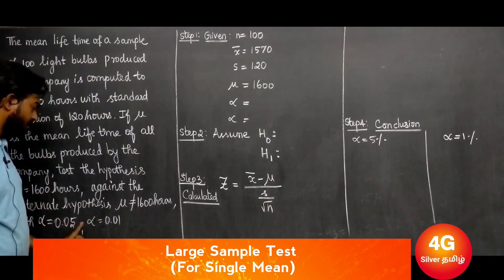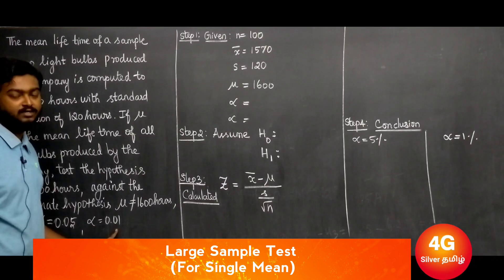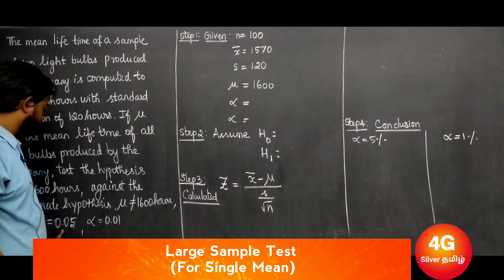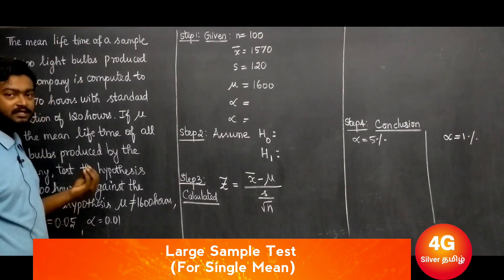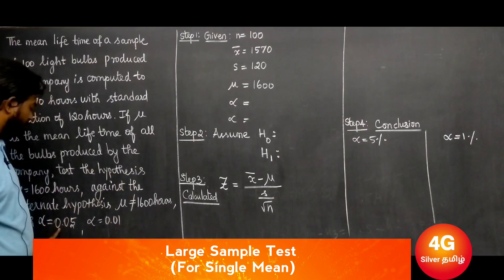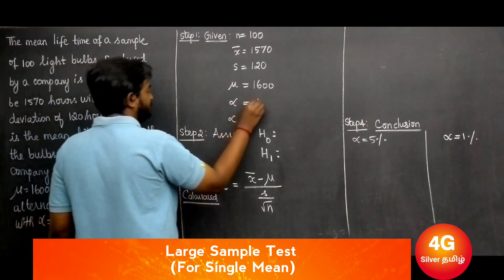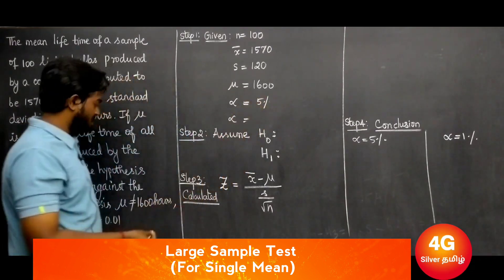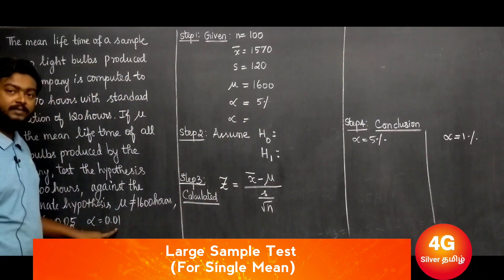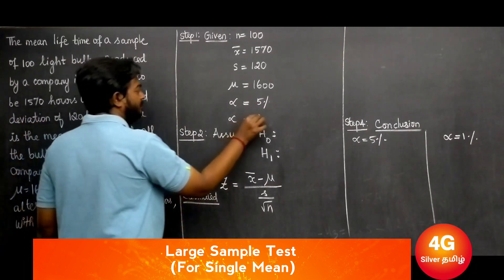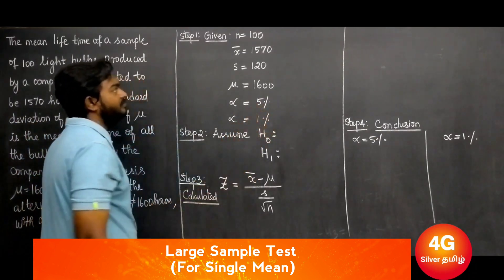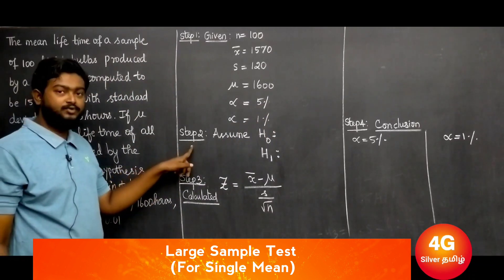With alpha value 0.05 and 0.01, where alpha is the level of significance. 0.05 equals 5 percent and 0.01 equals 1 percent. This is step one.